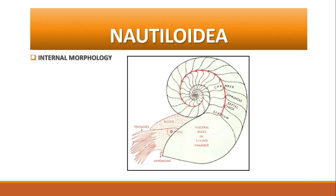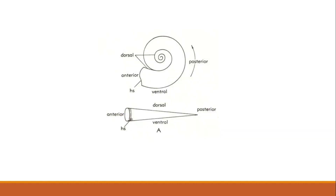Hello everyone. Today let's get started with the first subclass of cephalopods, that is Nautiloidea. When we talk about Nautiloidea, let's first look at its internal morphology. These nautiloidic shells are actually conical tube-like structures.